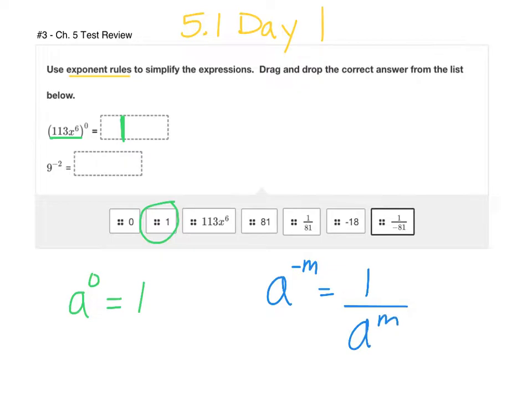So we essentially just take the reciprocal of it. So if I go ahead and rewrite 9 to the negative second using this rule, that would become 1 over 9 to the positive second power. Now we just need to simplify 9 to the second power. 9 squared, 9 times 9 is 81. So your final answer for the second part here would be 1 over 81.